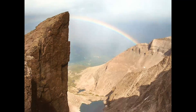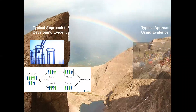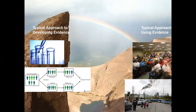In implementation science, essentially what we're doing is we're taking scientific evidence and using it routinely in practice and in policy. The first thing you have to think about is where that evidence comes from. Typically, we approach our evidence in a very rigorous manner, often in very pristine circumstances. We use randomized controlled trials and have a lot of controls and rigor in our evidence development. But when you think about where that evidence is being used, the typical approach is really in places where there is not that kind of control and structure.